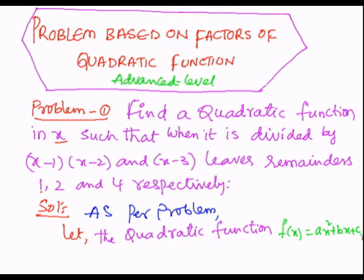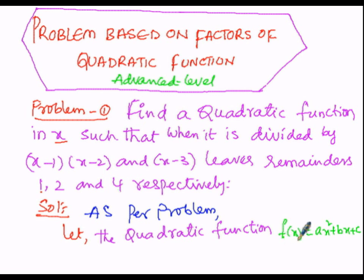The quadratic function f(x) = ax² + bx + c is divided first by (x minus 1) giving remainder 1, next by (x minus 2) giving remainder 2, and by (x minus 3) giving remainder 4. Here a, b, and c are unknown — a is the coefficient of x², b is the coefficient of x, and c is the real constant.